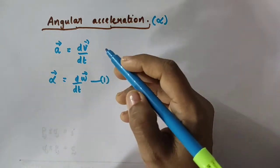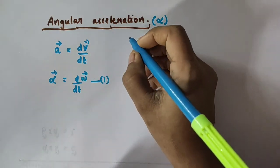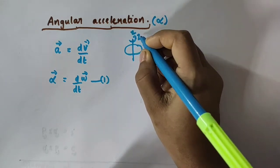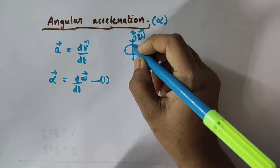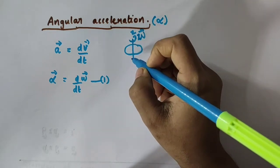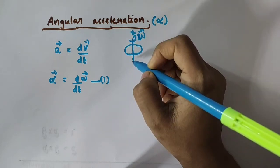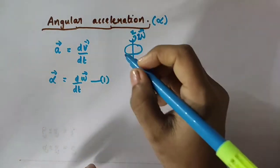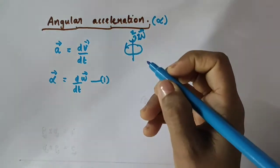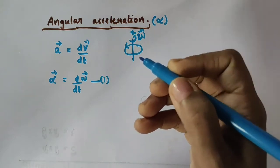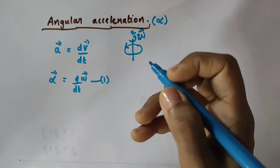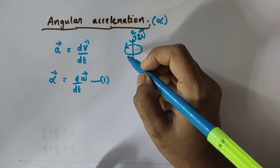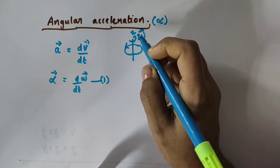Now, if the axis of rotation of the body is fixed — as we saw in our previous video — you can imagine it as the z-axis, with a rigid body rotating in the anticlockwise direction. If the axis of rotation is fixed, then the direction of angular velocity vector omega is also fixed. We can determine the direction of angular velocity by using the right-hand screw rule, which we discussed in our previous video. I will provide the link for that in the description box. If the axis of rotation is fixed, then the direction of vector omega is also fixed and hence angular acceleration is also fixed.